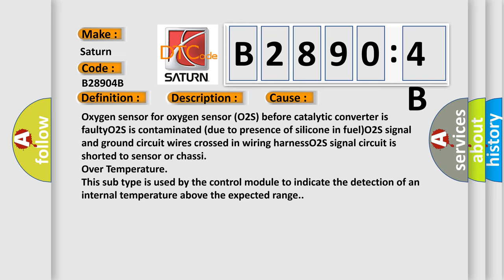Oxygen sensor for oxygen sensor O2S before catalytic converter is faulty. O2S is contaminated due to presence of silicone in fuel. O2S signal and ground circuit wires crossed in wiring harness. O2S signal circuit is shorted to sensor or chassis over temperature. This subtype is used by the control module to indicate the detection of an internal temperature above the expected range.